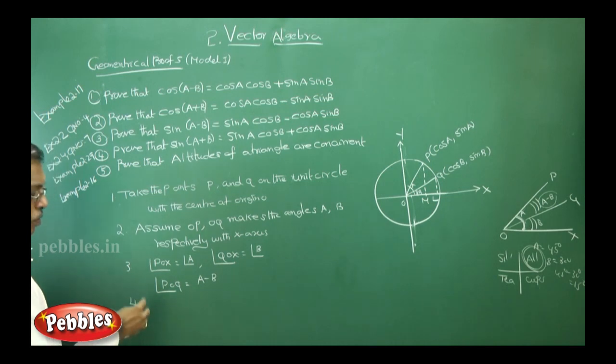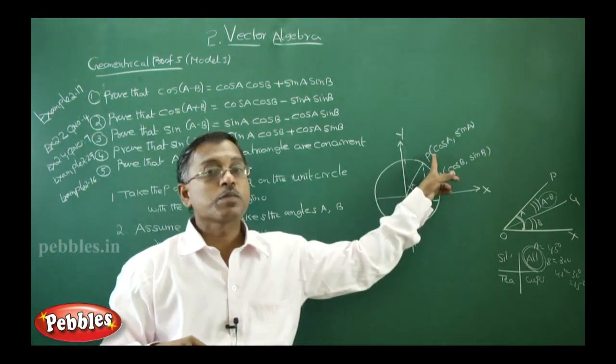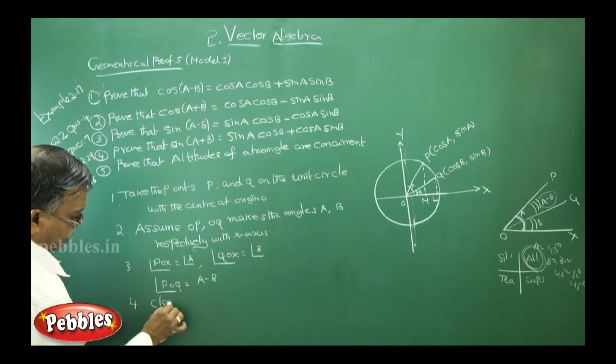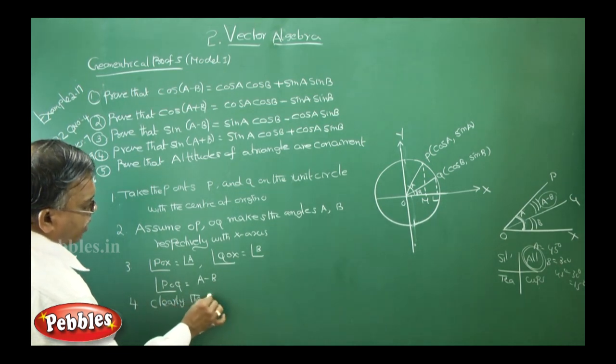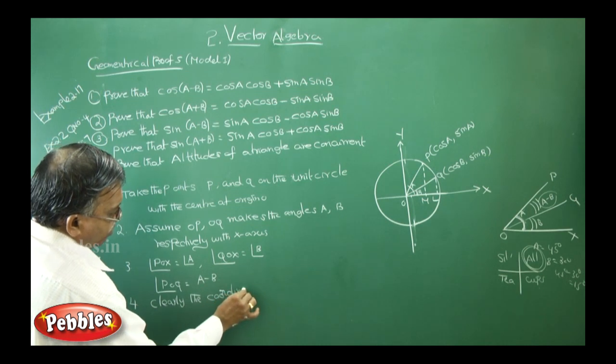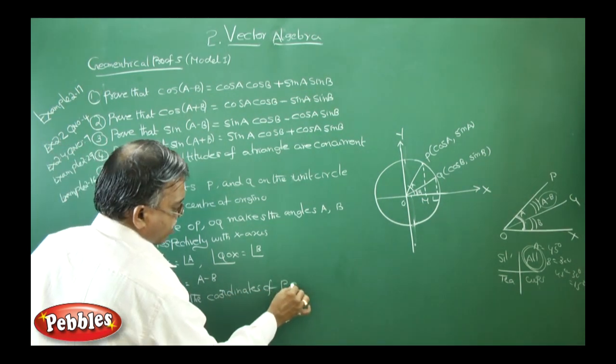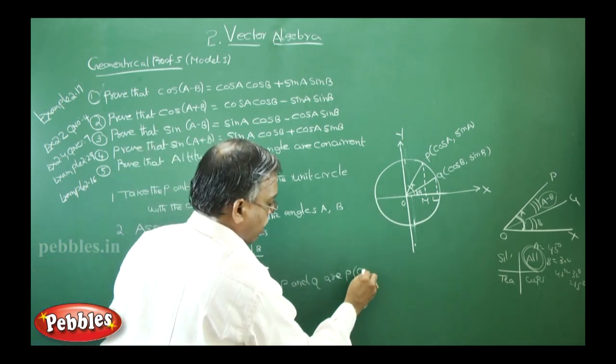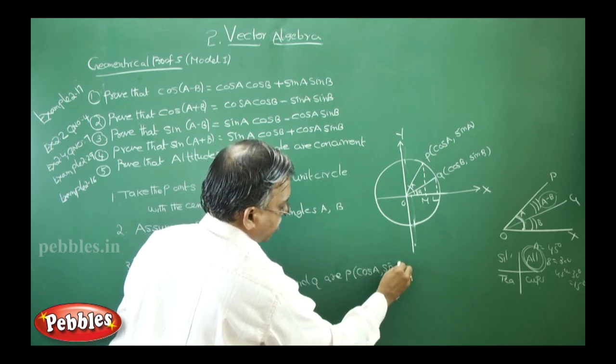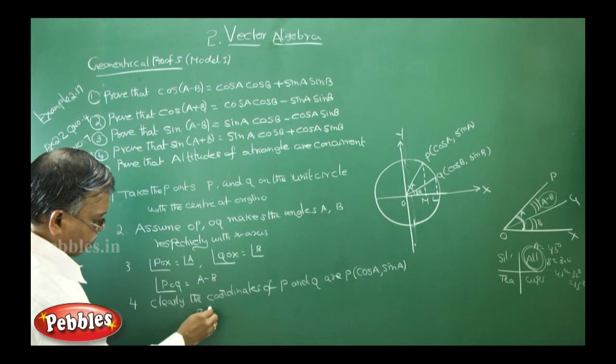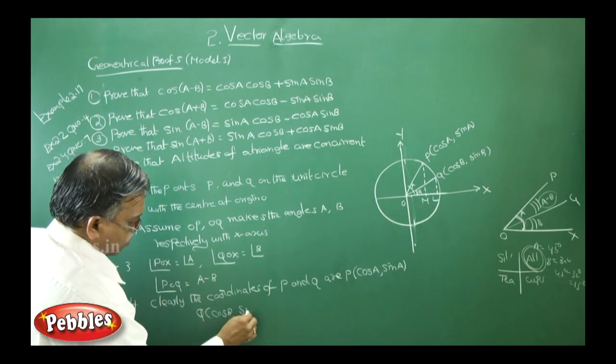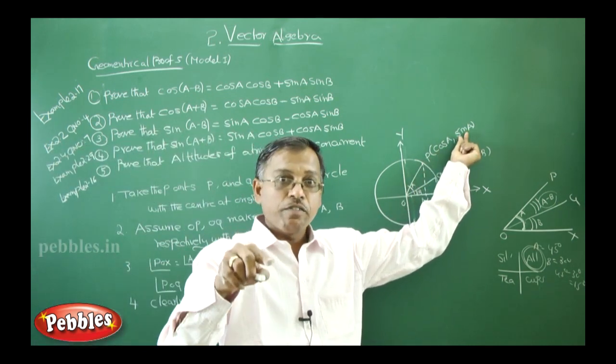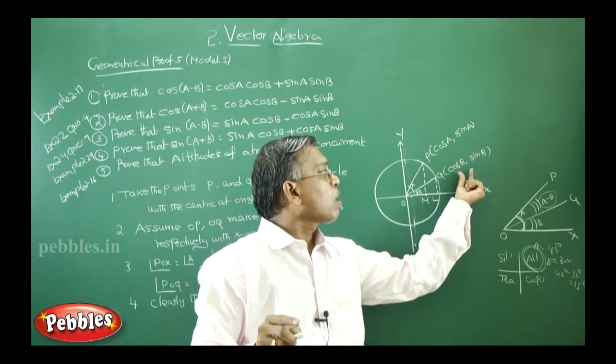Fourth point, you should tell something about the coordinates P and Q. So clearly, the coordinates of P and Q are: P is cos A, sin A. Q point is cos B, sin B. P point, cos A, sin A. In the same way, Q point also you should take it as cos B, sin B.